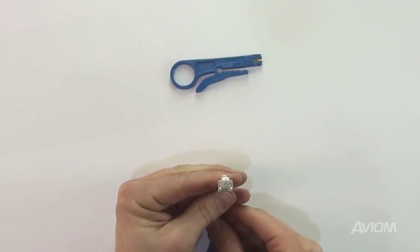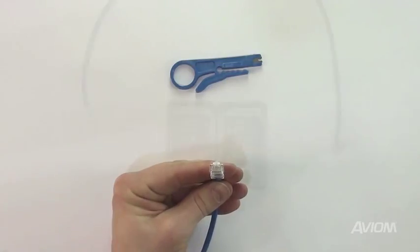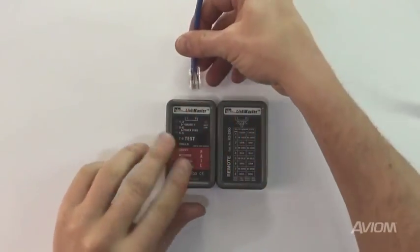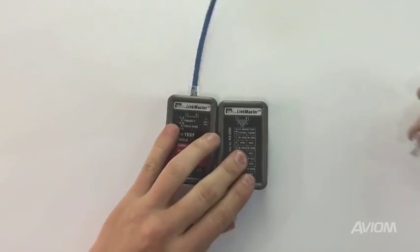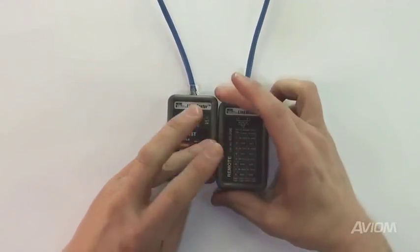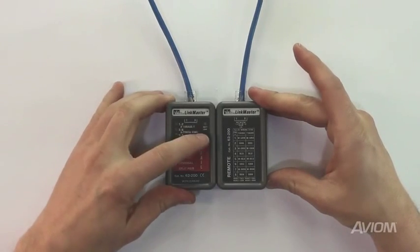Repeat this process on the other end of the cable. A cable is not properly terminated without at least a basic test to confirm that the wiring is in the proper order and it is not open or shorted. I'm using a simple, inexpensive test set that will verify these details.